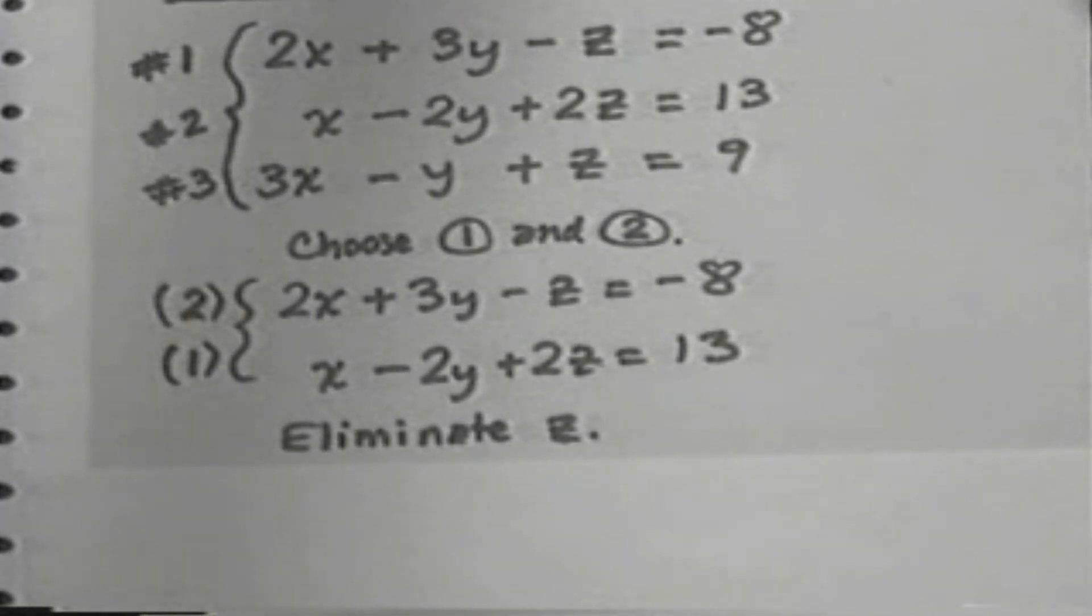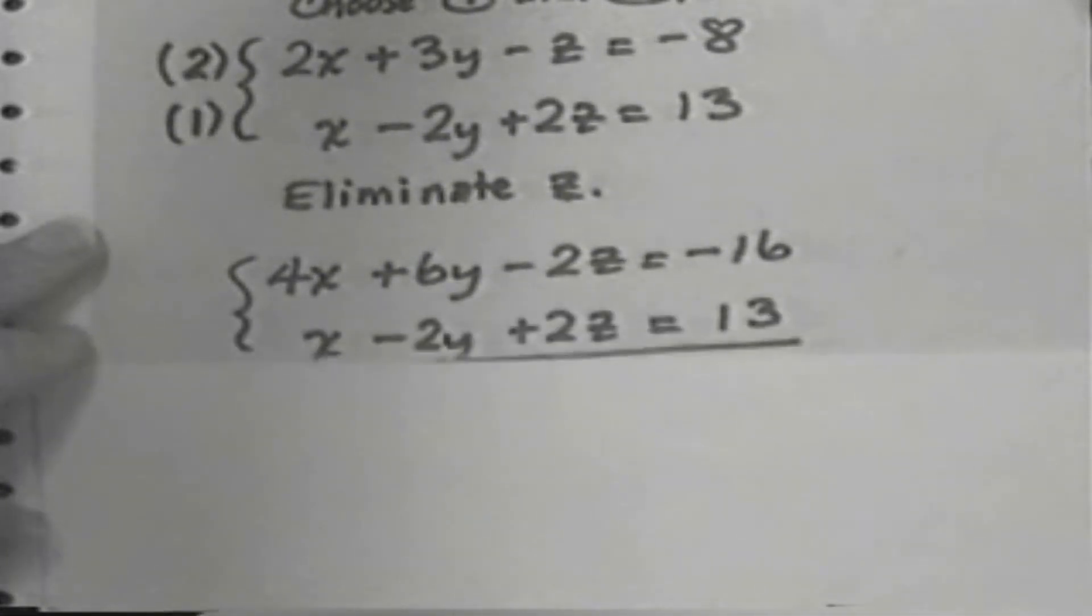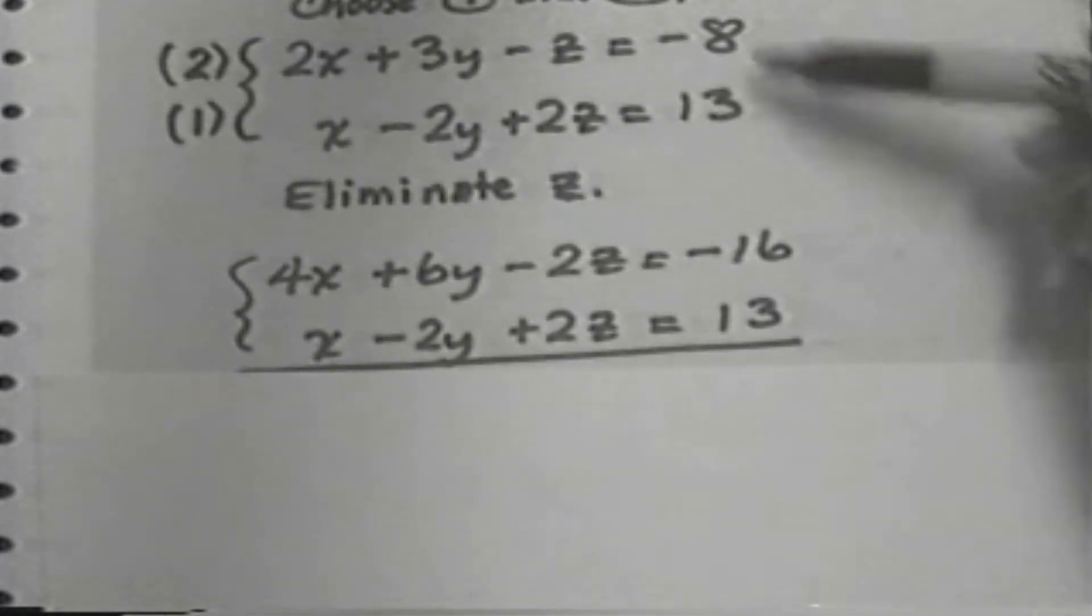2 times the first equation, 1 times the second equation. That gives me 4x plus 6y minus 2z equals negative 16. And x minus 2y plus 2z equals 13. 2 times equation number 1 and 1 times equation number 2. This will eliminate z.